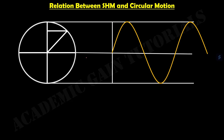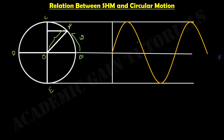We will see the relation between simple harmonic motion and circular motion. When we derive the equation of simple harmonic motion, we derive it from a circular path. In this case, this is our origin O, and we have points B, C, D, and E. The particle is moving in the circular path BCDE with an angular velocity omega. The distance OP is our radius A.